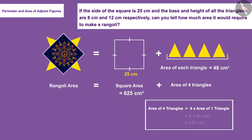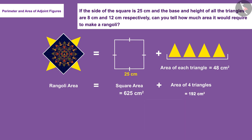Well done! The value of the area of all four triangles is 192 square centimeters. Now let's find the area of the rangoli. Substituting the area of the square and the triangles, the rangoli area is 817 square centimeters.